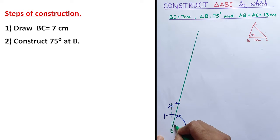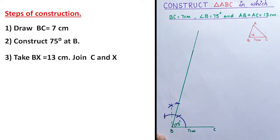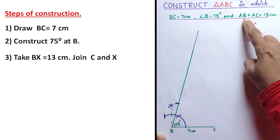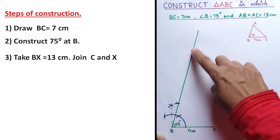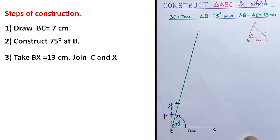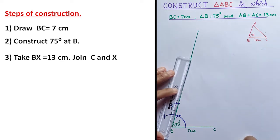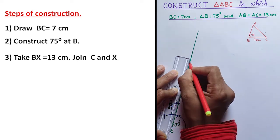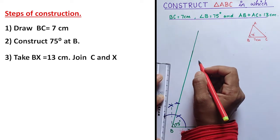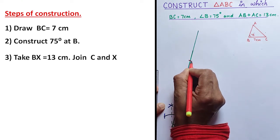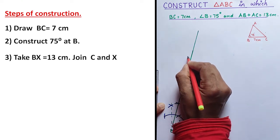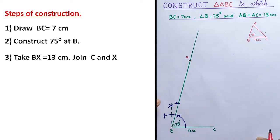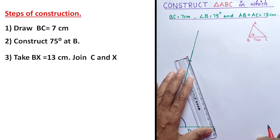This angle measure is 75 degree. Now we have to take AB plus AC equal to 13 centimeter on this line segment, so you can use a ruler. 13 centimeter comes here at this point — you can take any name; I'm using the alphabet X.